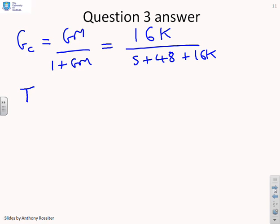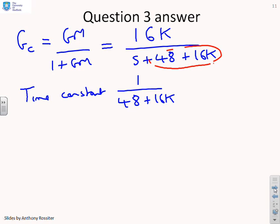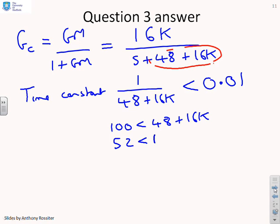So in this case, the time constant is given as 1 over 48 plus 16k. Hopefully you can see that the time constant is the inverse of the pole position. So the time constant is 1 over 48 plus 16k, and we want this to be less than 0.01. So if I basically swap the 0.01 and 48 plus 16k, you'll find this gives you the same as 100 is less than 48 plus 16k, or 52 is less than 16k, or k is greater than 52 over 16.